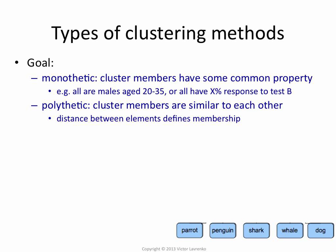One way to categorize them is by the goal — what are they trying to produce? What kind of clusters are they trying to produce? There are two types here: we can either produce monothetic or polythetic clusters. In a monothetic clustering, if you take a single cluster, all the individuals in that cluster will have some common property, which you can describe in a couple of sentences. For example, a cluster containing all males aged 20 to 35 is a monothetic cluster. In medicine, you might have all the patients that have a certain response to a particular test — that would be a monothetic cluster.